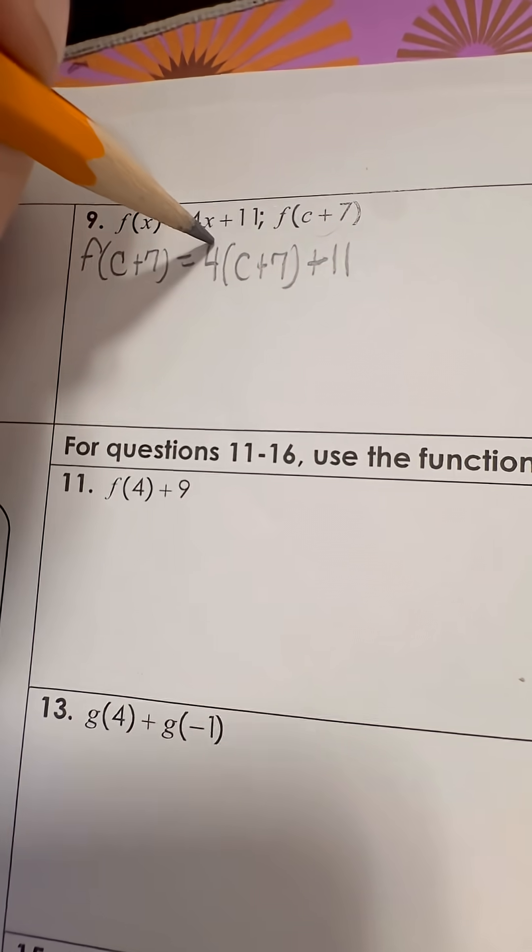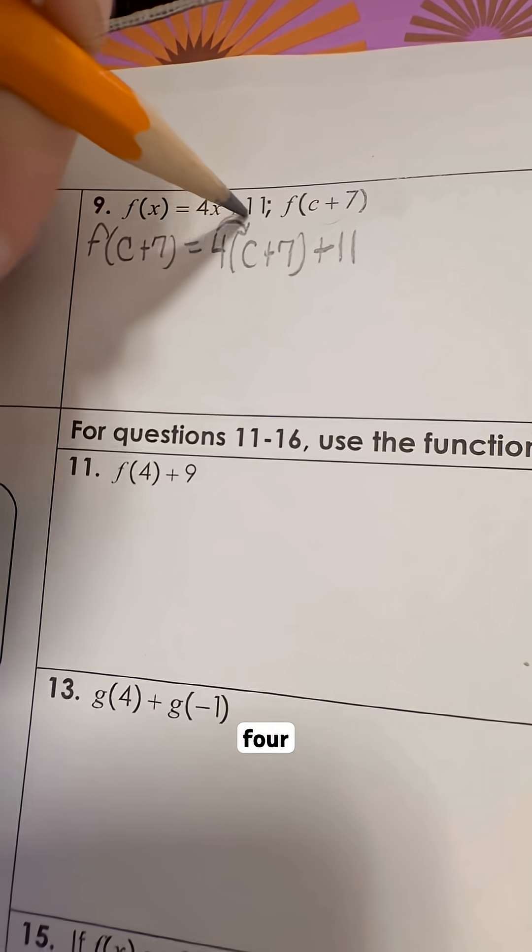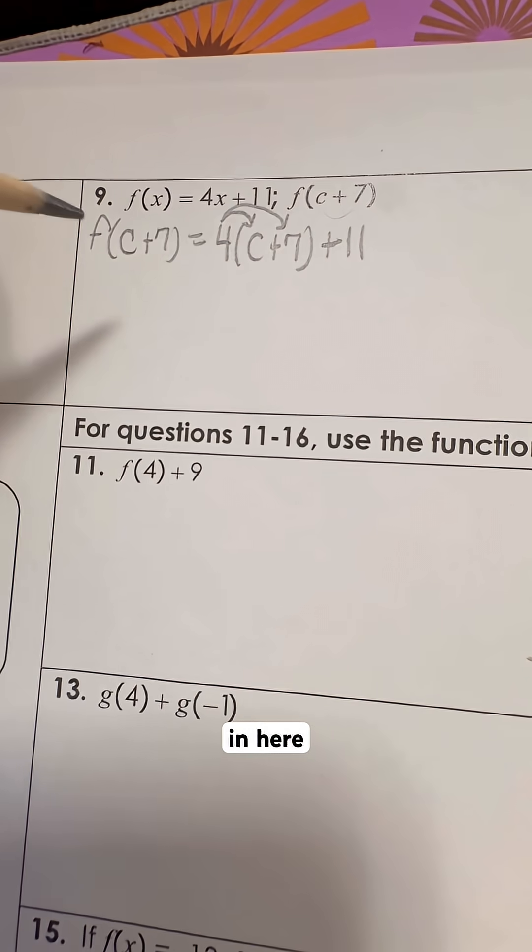So now all I'm going to do is distributive property here. I'm going to multiply this 4 times both items in here.